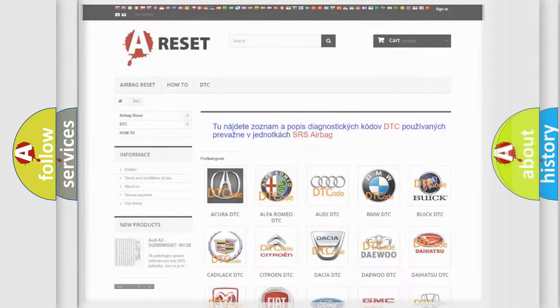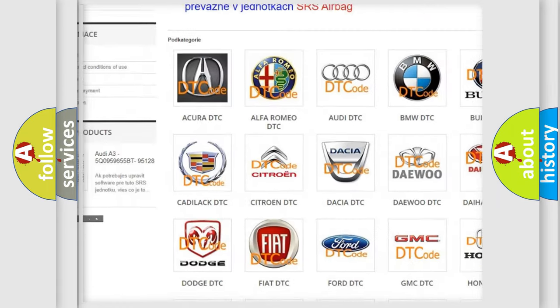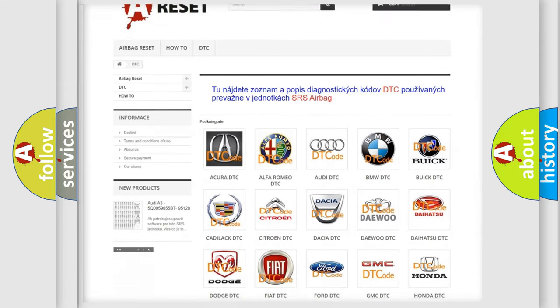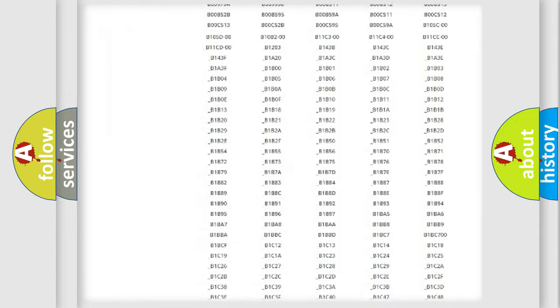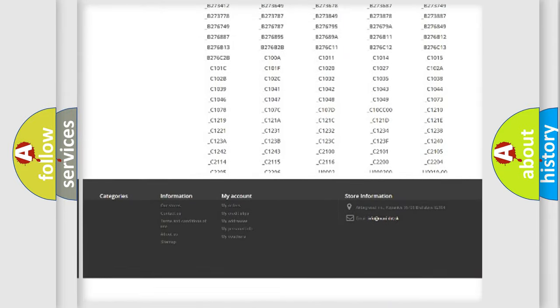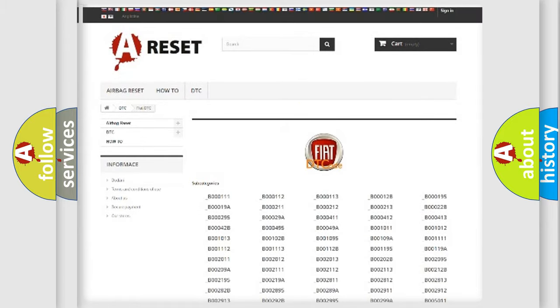Our website airbagreset.sk produces useful videos for you. You do not have to go through the OBD2 protocol anymore to know how to troubleshoot any car breakdown. You will find all the diagnostic codes that can be diagnosed in Fiat vehicles, and also many other useful things.